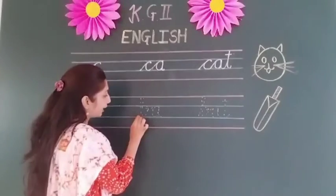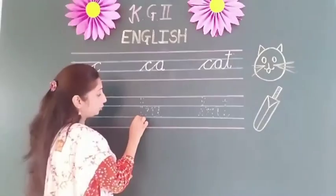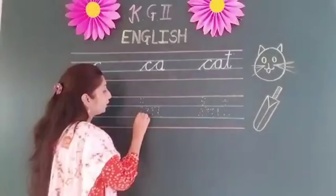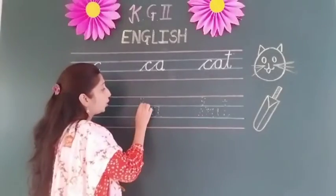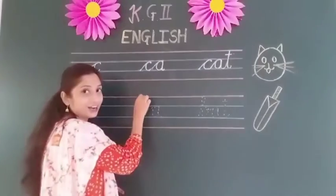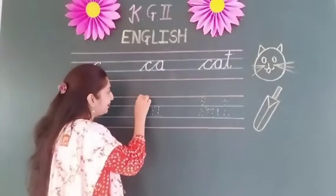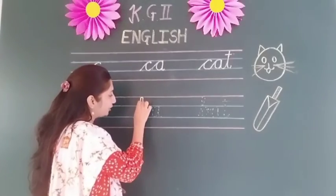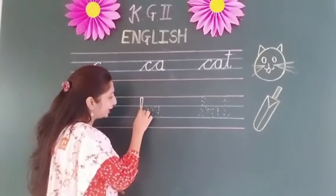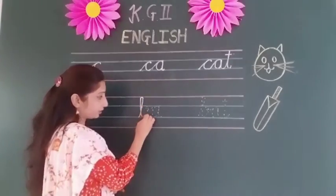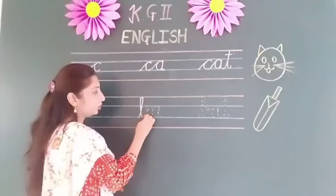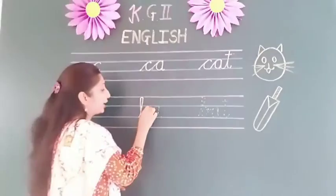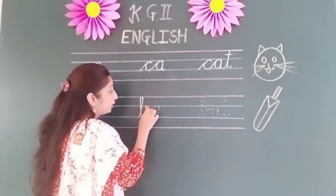One more time: put a dot on the second blue line, go up to the first red line, and make a curve. Go back to the second blue line, make a curve. Go up to the first blue line, make a curve.